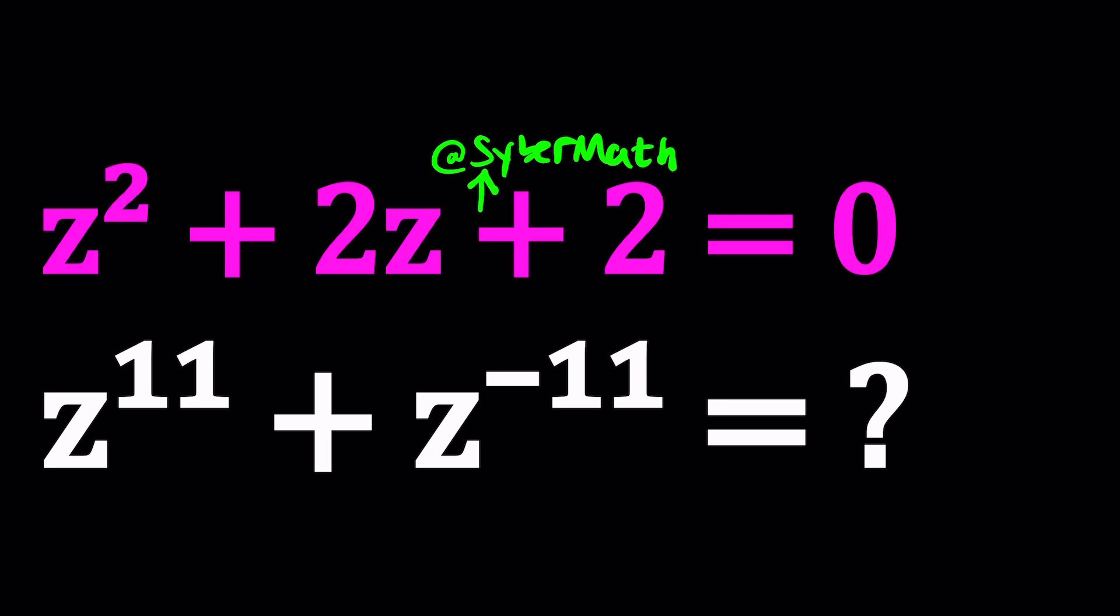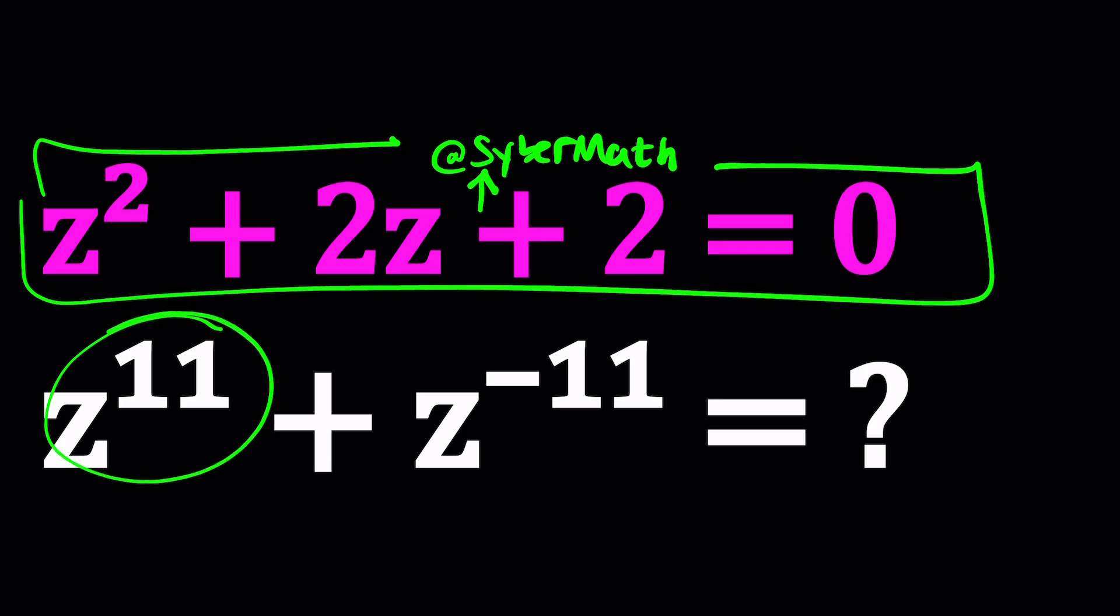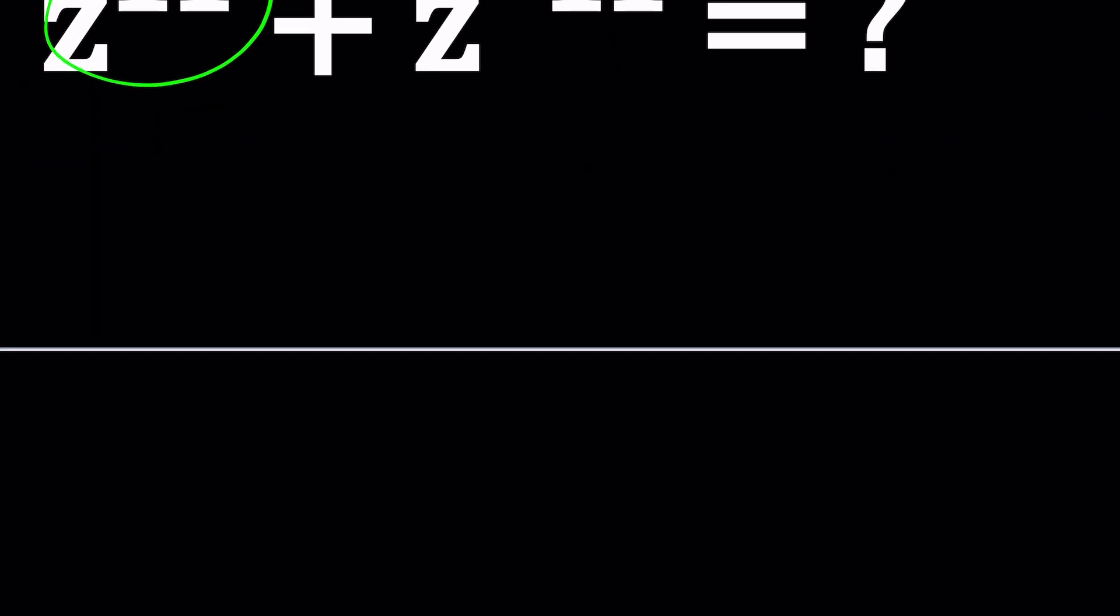Great. So we have this equation. The first equation is given to us, right? And now we're supposed to evaluate this. So how do you evaluate z to the 11th power? Easy. We just solved the equation. Let's call that the first method. z squared plus 2z plus 2 equals 0.